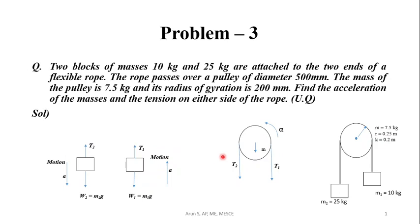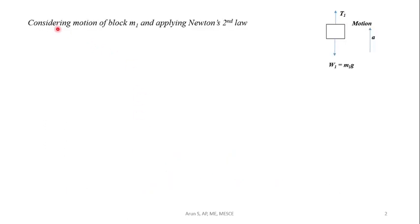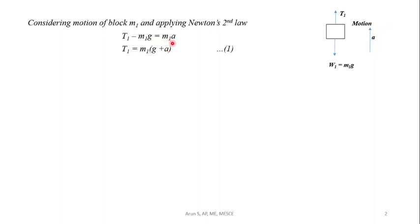Applying Newton's second law separately, we can find T1, T2, and A. Considering the motion of block M1 in the upward direction: T1 minus W1 equals M1 times A. That is, T1 minus M1g equals M1A. Rearranging, T1 equals M1 times (g plus A). This is equation number 1.